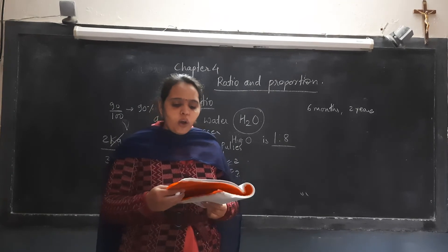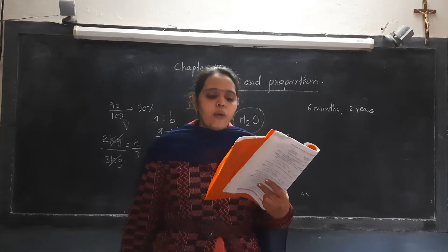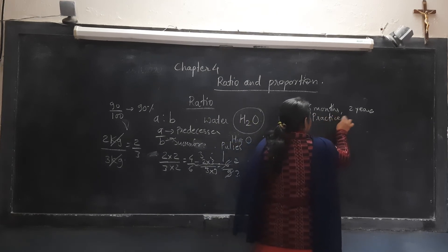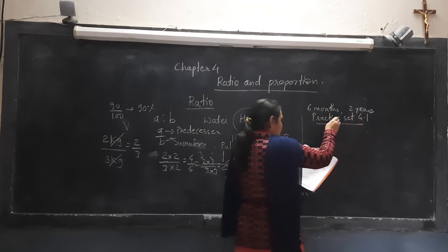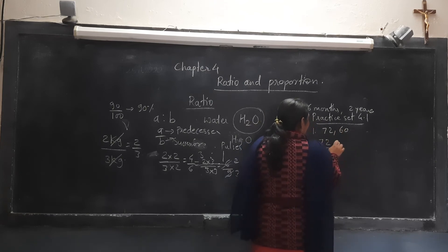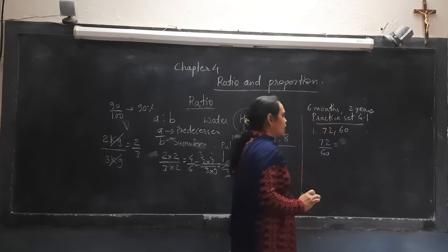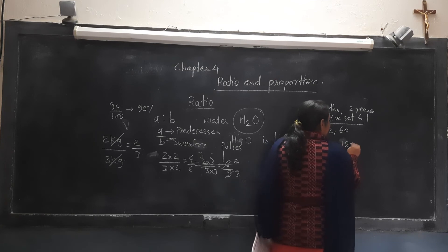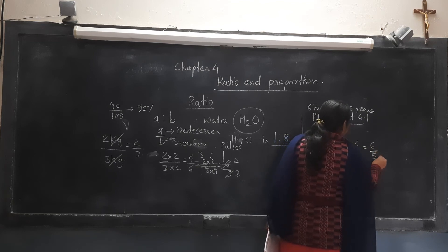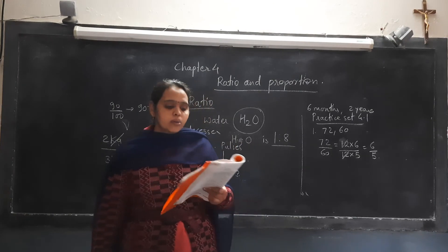Now we will start Practice Set 4.1. In Practice Set 4.1, question number 1: from the following pairs of numbers, find the reduced form of ratio of first number to second number. For example, 72 and 60 - we find the common multiple. Both are divisible by 12: 12 into 6 and 12 into 5, so cancelling gives us 6 upon 5. So in this way you can find and convert to the reduced ratio form.